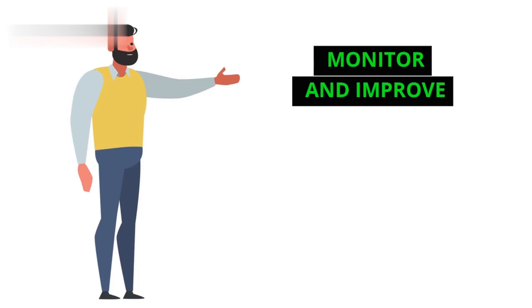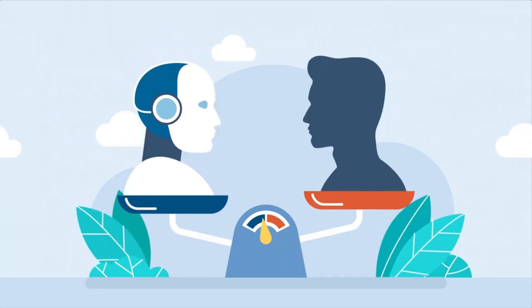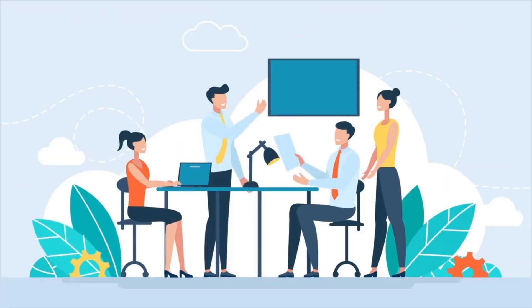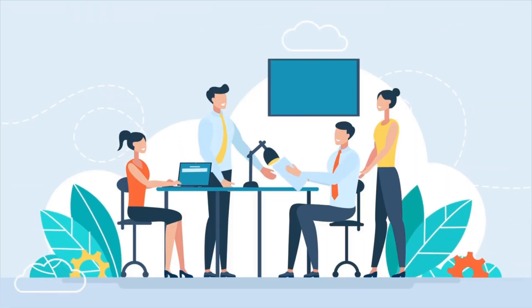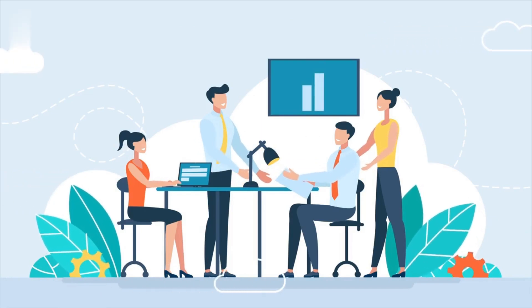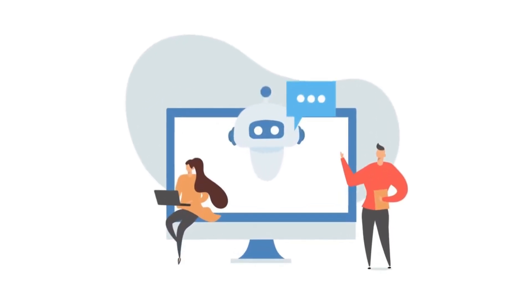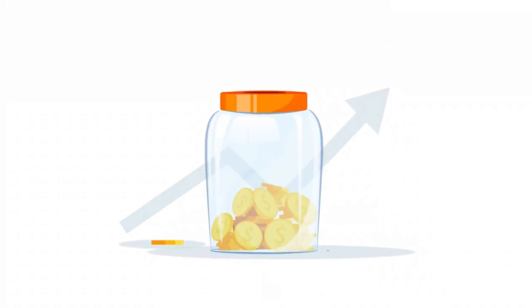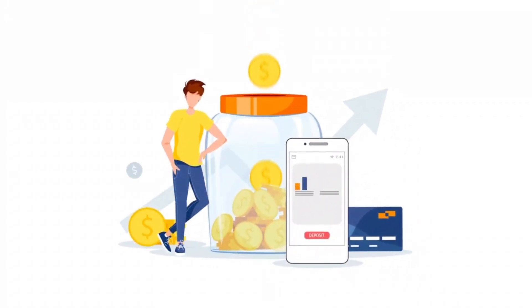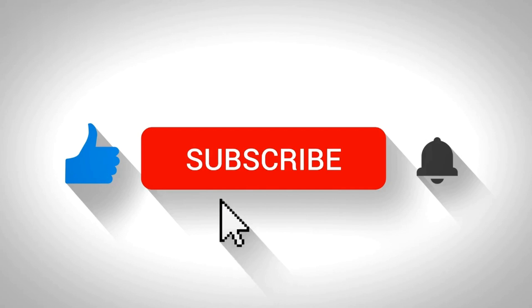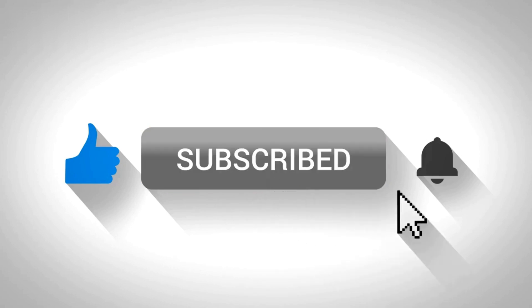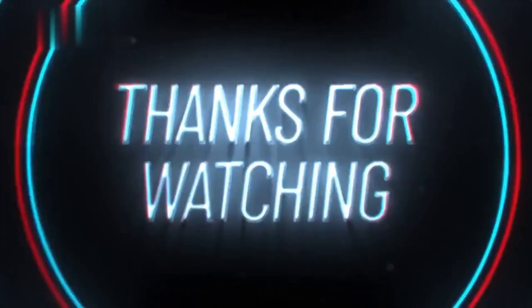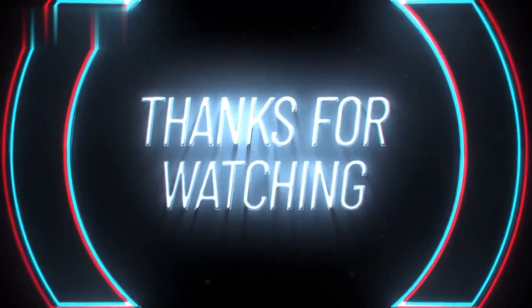Step 5: Monitor and improve. Finally, keep track of your bot's performance. Use analytics to see what's working and what needs improvement. Regularly update your bot to keep users engaged and attract new ones. And that's a wrap — you're now ready to start earning with Telegram bots. If you enjoyed this video, hit that like button and don't forget to subscribe for more awesome tips. Thanks for watching and see you next time.